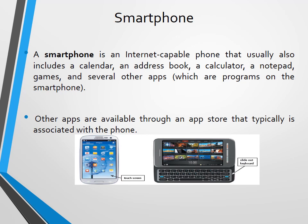A smartphone is an internet-capable phone that usually also includes a calendar, address book, calculator, notepad, editor, games, and several other apps — which are programs on the smartphone. Other apps are available through an app store typically associated with the phone.